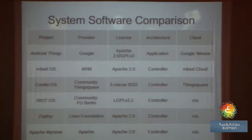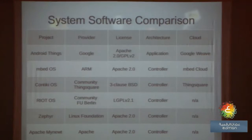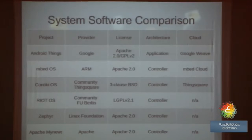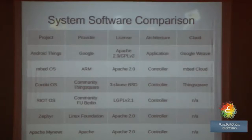To sum up, I can compare a number of current open source system softwares and ecosystems: Android Things, mbed OS, Contiki OS, RIOT, Zephyr, and Apache Mynewt, which I have presented in detail in the paper. Their providers are Google, ARM, ThinkSquare, Linux Foundation, and Apache. They have various integrated licenses, can support a number of architectures, and a number of them have already made a cloud solution.